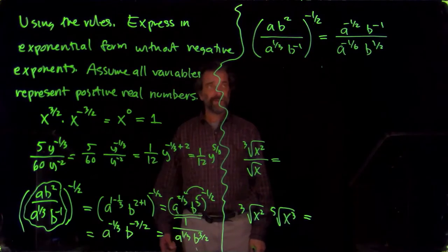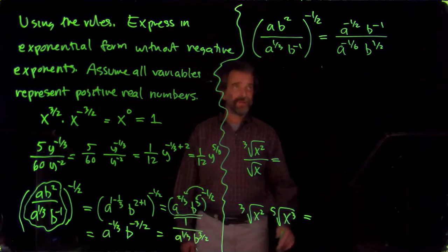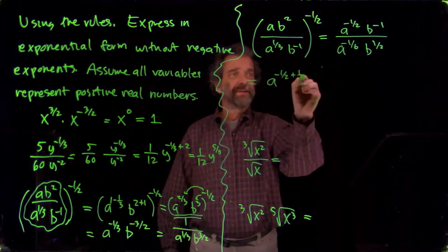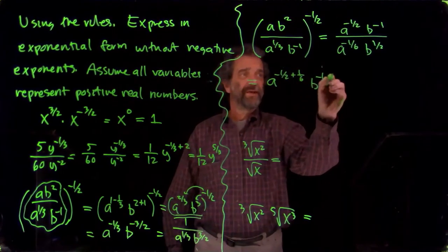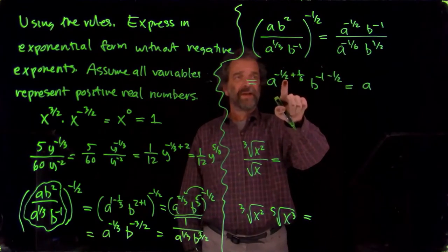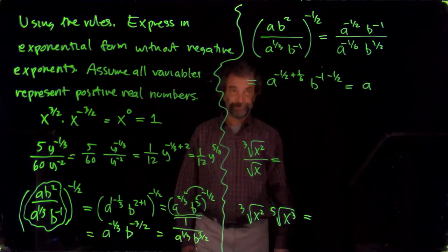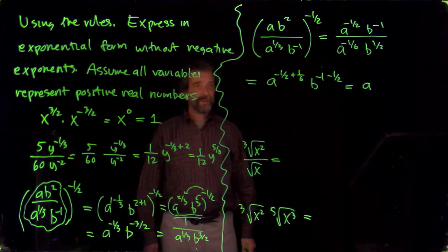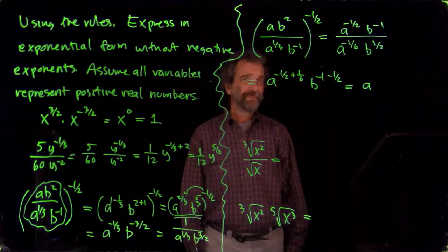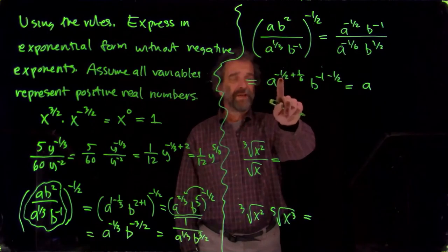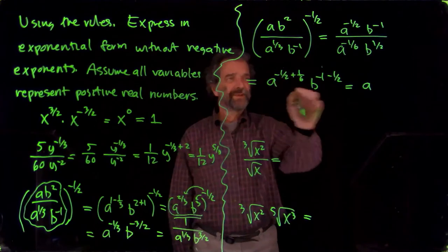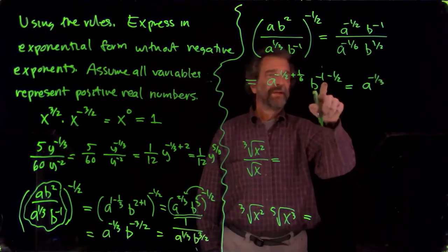Okay, and then now we've got the a's and b's where we can now simplify them. So we get a to the minus one-half plus one-sixth, then we get b to the minus one minus one-half, making progress. That's a minus one-half plus one-sixth. Minus one-half is minus three-sixths. Plus one-sixth is minus two-sixths. Minus two-sixths is minus one-third. I'm having trouble today.